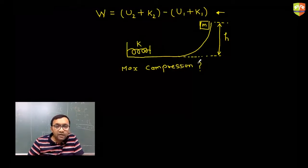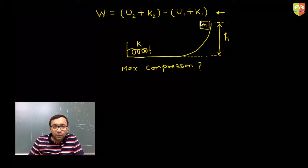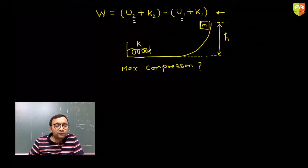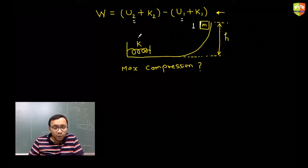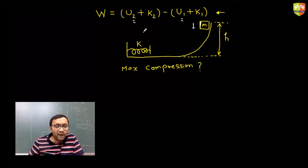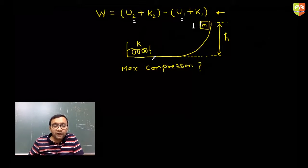The answer is root of 2mgh by k. Whenever you use the work-energy theorem, you are using it between two points — point number one and point number two — and you can pick any of the two points. So I will take point number one as the initial position, and point number two as where the spring gets compressed maximum.